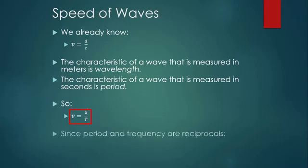Now remember, we just learned that period and frequency are reciprocals. This means that we could also write the equation for the speed of a wave as V equals f lambda. And that's actually the way that it's presented on your reference table.